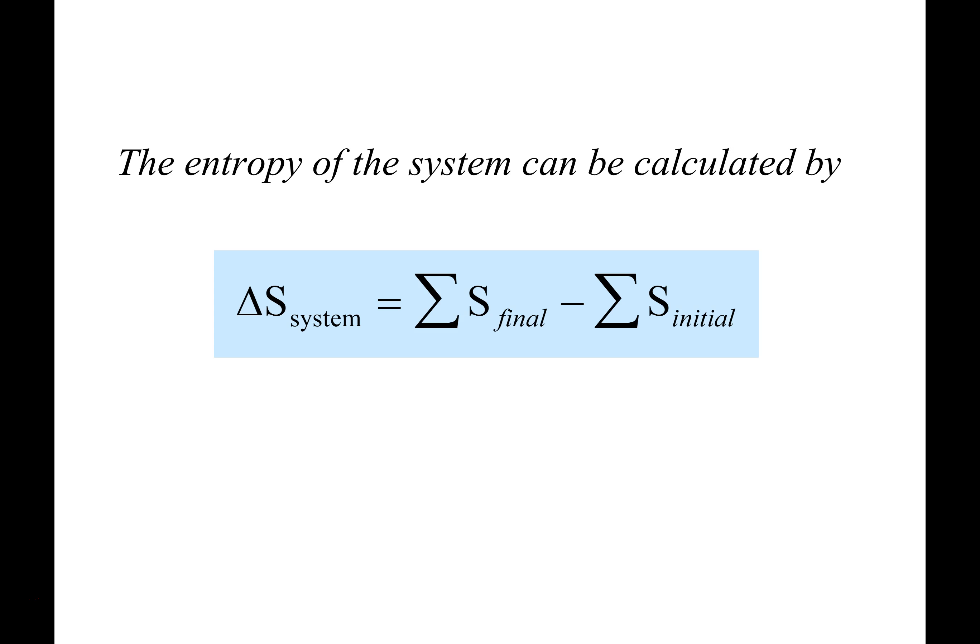Focusing back on our system: we did final minus initial before with enthalpy. It's always final minus initial. We're going to do a very similar process to what we did with enthalpy — focus on the product side and add them all up, then the reactant side and add those up, then do the subtraction. Delta S = Σ(products) − Σ(reactants).